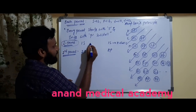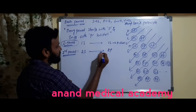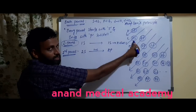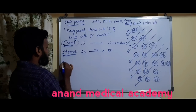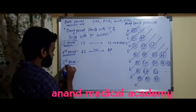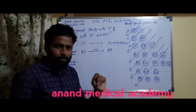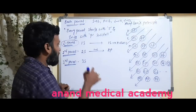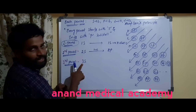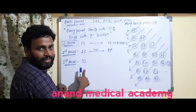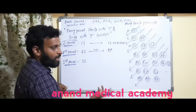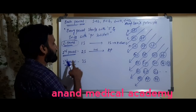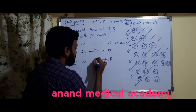Coming to the third period: after 2p is filled, electrons enter 3s. So the third period starts with 3s and ends with 3p. After 3p, electrons enter 4s, beginning the fourth period. In the fourth period: 4s is filled, then 3d, then 4p. The pattern shows that the first period is unique (1s only), second and third periods are similar (S and P only), while the fourth period additionally includes D sub-shell (4s, 3d, 4p).